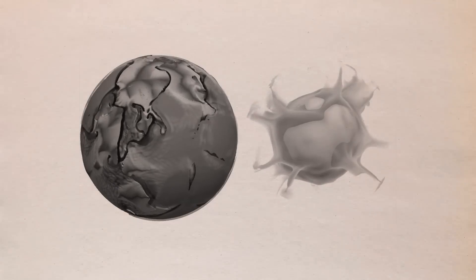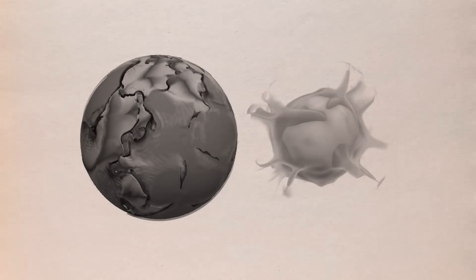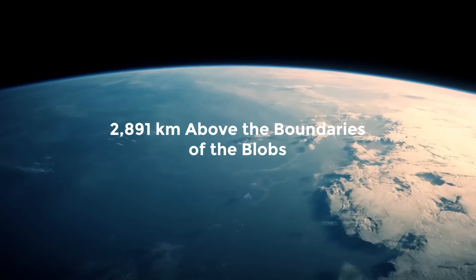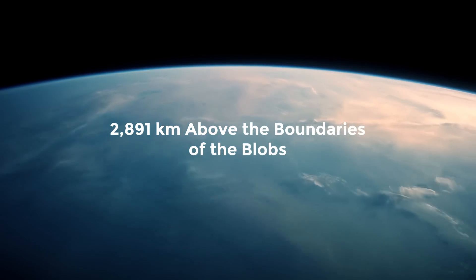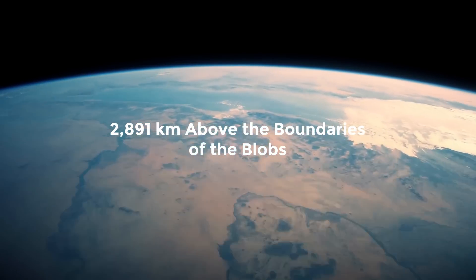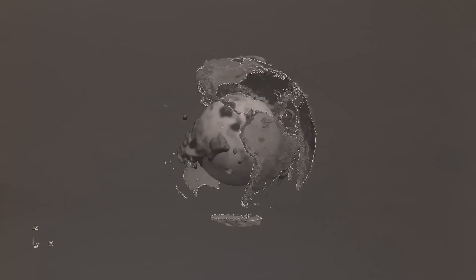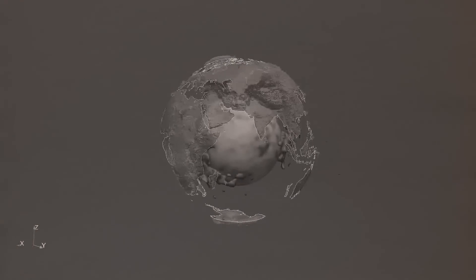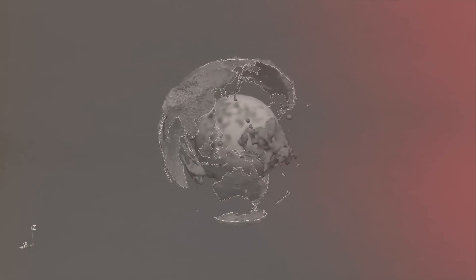Instead, they start to form around the edges. This results in mantle plumes in our own terrestrial realm that are 2,891 kilometers above the boundaries of the blobs. It appears that the LLSVPs are encouraging them to grow in specific areas.